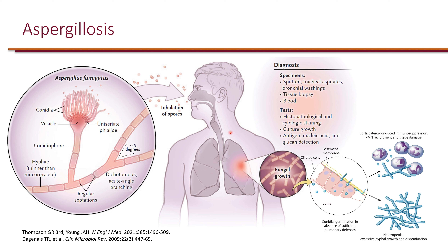One thing important to understand about the pathophysiology is that once aspergillus species are inhaled in the lungs and start to grow, the aspergillus hyphae may invade the pulmonary arterioles. They can lead to ischemic necrosis, intravascular thrombosis, and hemorrhagic pulmonary infarct due to rapid hyphal growth. So one symptom you will see is hemoptysis — essentially blood coming out of the lung.